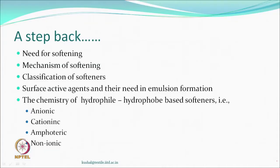Welcome back to the class on textile finishing. Let us see what we have done till now. We have talked about the need for softening, mechanism of softening, classification of softeners, surface active agents, and the chemistry of the hydrophile. Based on that, the classification takes place as anionic, cationic, amphoteric, and non-ionic. These are the types of softeners based on the chemistry of the hydrophile, and we shall continue further.